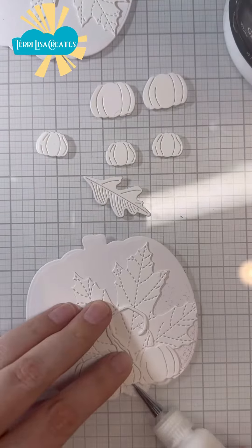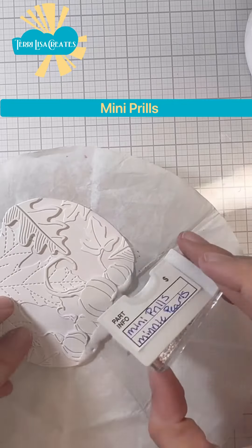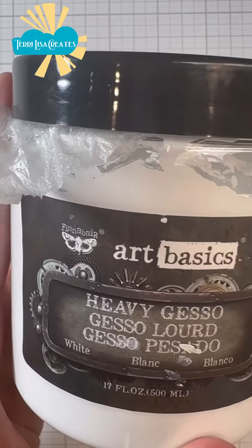First I die cut a bunch of fall ephemera. Second I layered them all up and added some prills to the bottom.